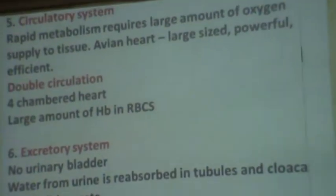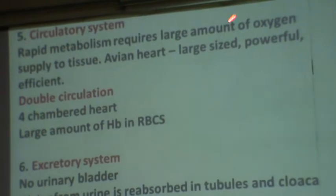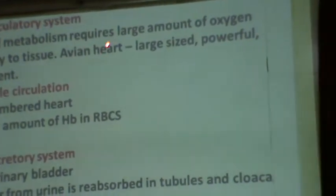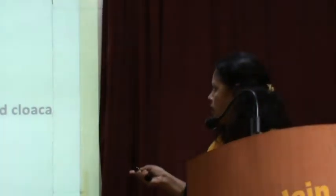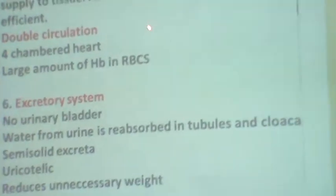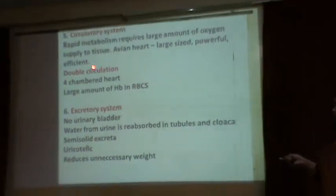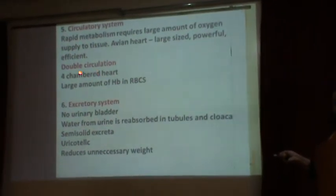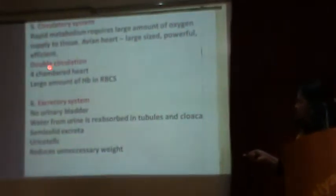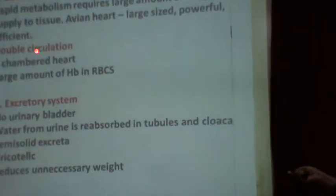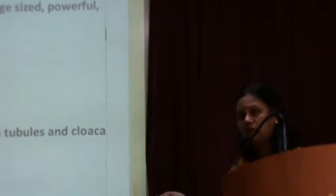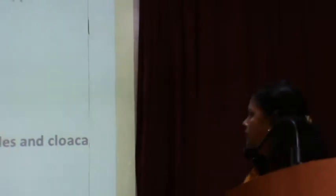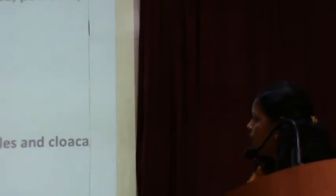In the circulatory system, rapid metabolism requires a large amount of oxygen, so the circulatory system is well developed. The avian heart is large — the term tachycardia is used to describe this large, powerful, efficient heart. Double circulation takes place in birds: the heart receives blood twice. The heart is four-chambered, and a large amount of hemoglobin is present in the red blood cells. All these features support energy production needed during flight.